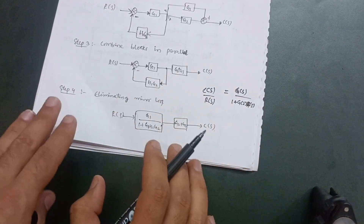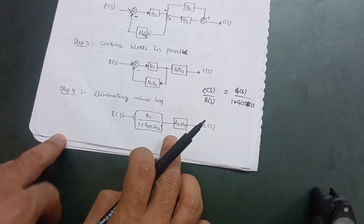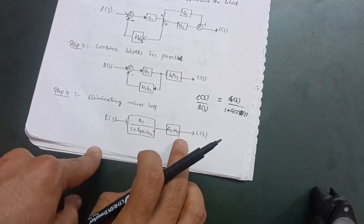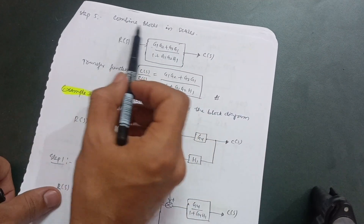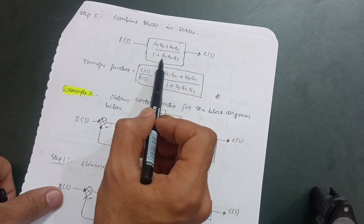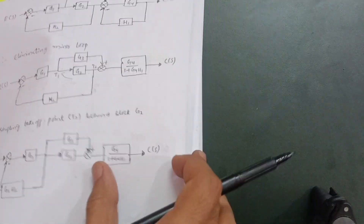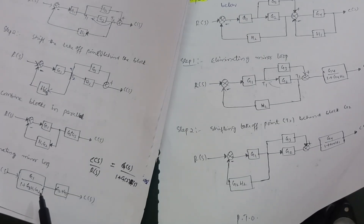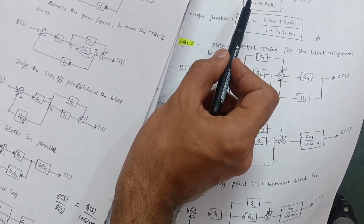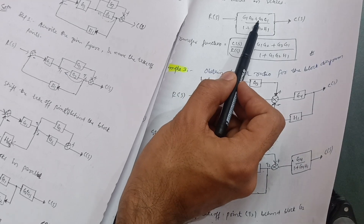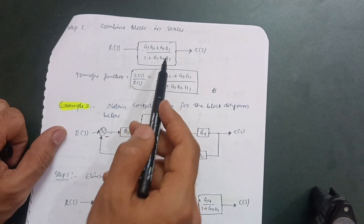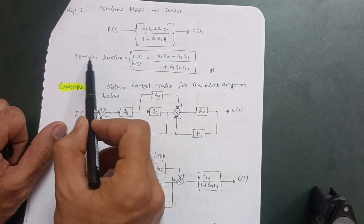These two remaining blocks are now in series. When combining blocks in series, you multiply them. So combining gives G1·(G2 + G3) upon (1 + G1·G2·H1). Multiplying G1 into G2 gives G1·G2, and G1 into G3 gives G1·G3, so the numerator is G1·G2 + G1·G3, and the denominator is 1 + G1·G2·H1.